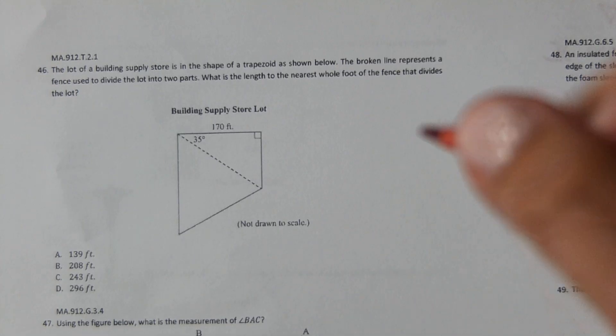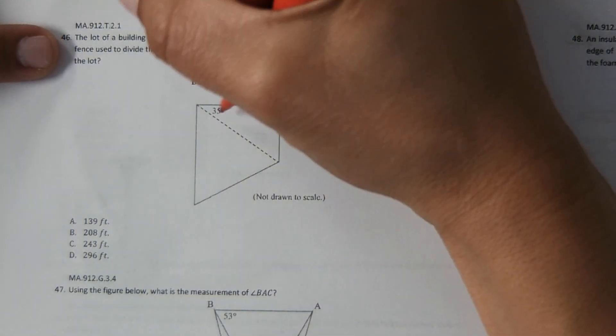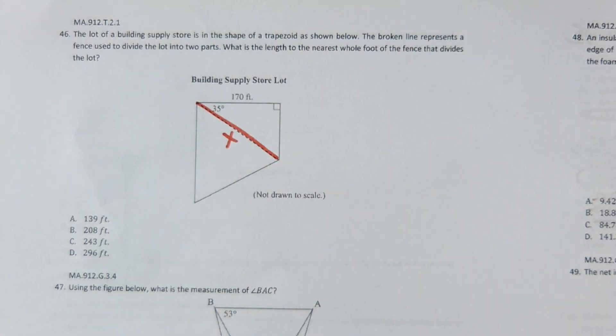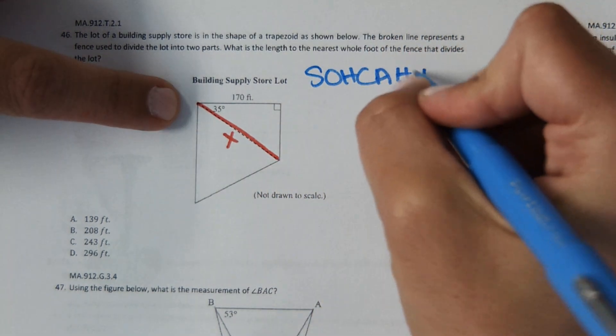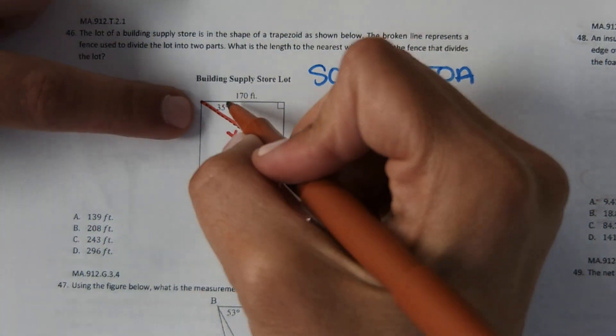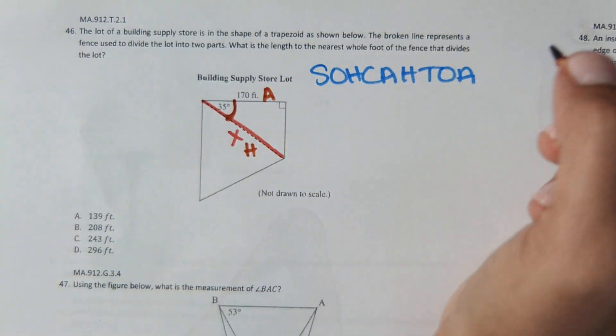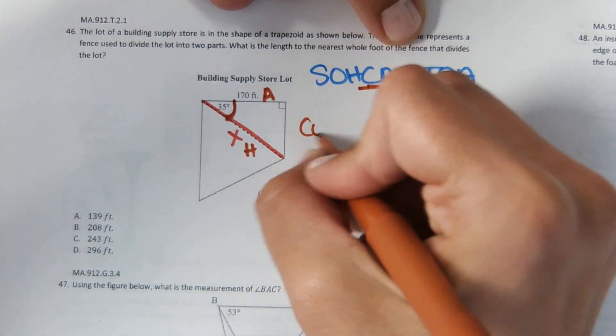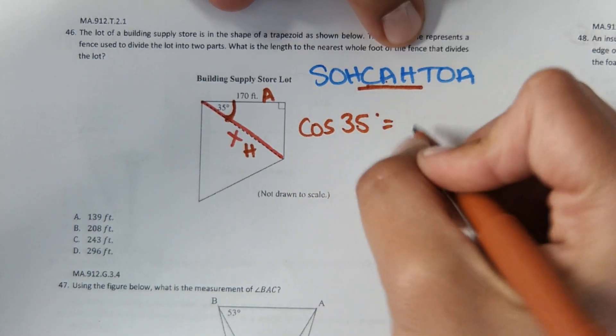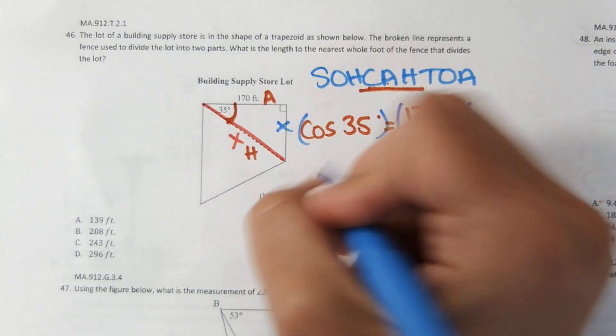The lot of a building supply store is in the shape of a trapezoid as shown below. The broken line represents the fence used to divide the lot into two parts. What is the length to the nearest whole foot, a fence that divides the lot? So we need to find the length of this. So this is our X. And the only way to find this length is to use trigonometry. So we're going to use SOHCAHTOA. And so we have the designated angle right here. And then the two sides that are labeled, we have our hypotenuse and our adjacent side. And then opposite doesn't have anything there, so we don't label that. And then, so A and H, we're going to use COSINE. So the way we'd set this up is COSINE of 35 degrees equals adjacent over hypotenuse, 170 over X. And from here, multiply this by X. And then from here, divide this by COSINE of 35, and X equals 170 over COSINE of 35.